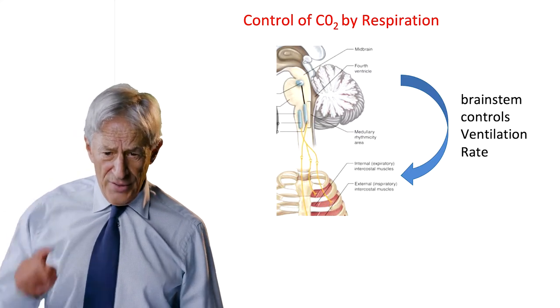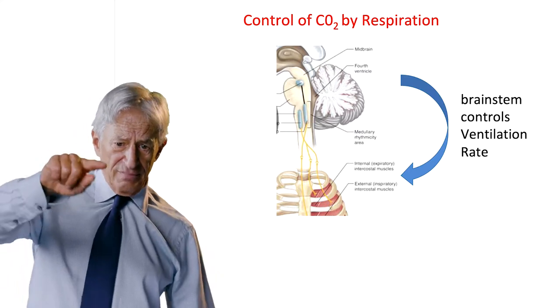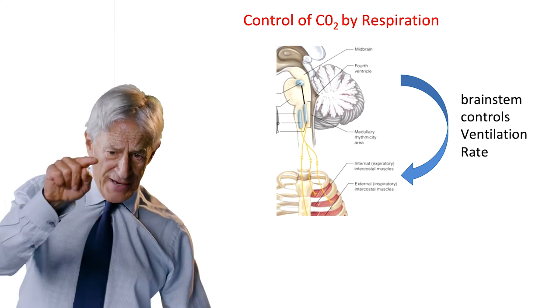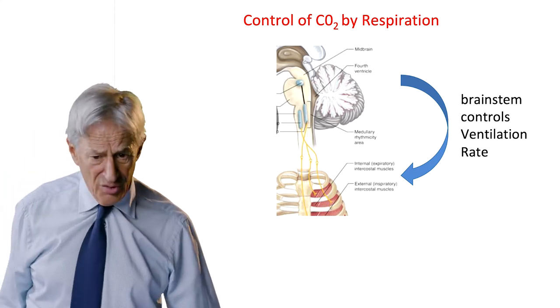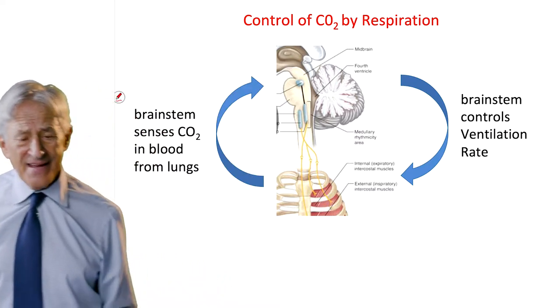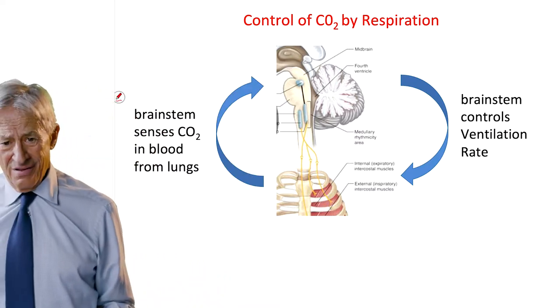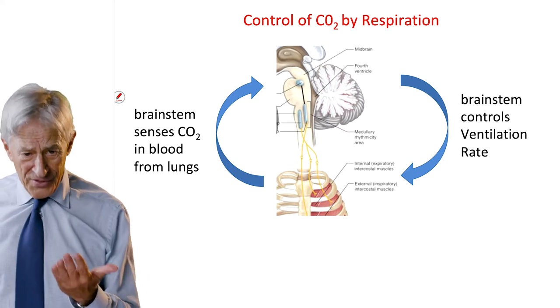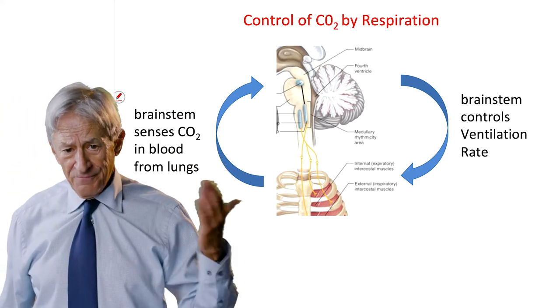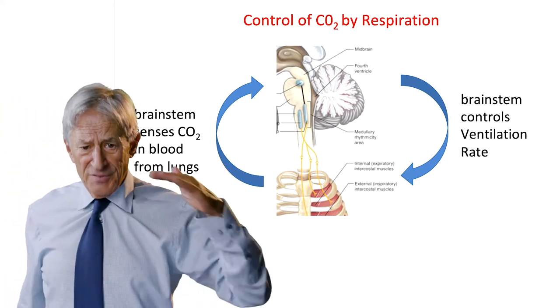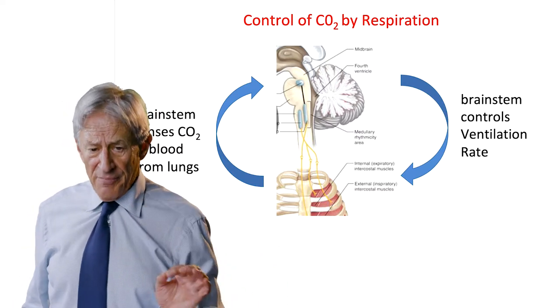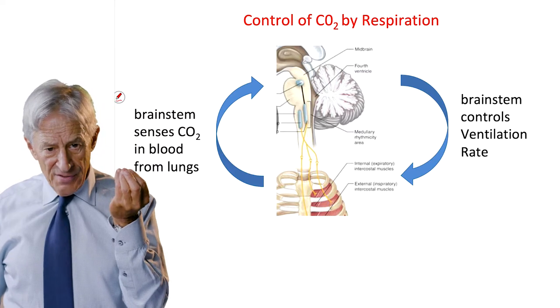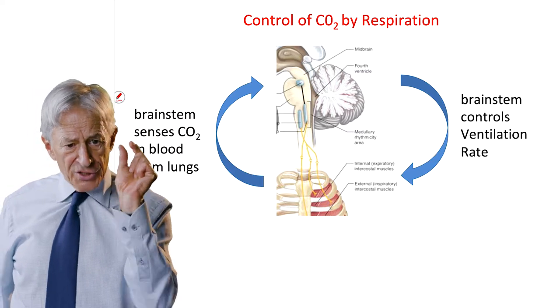Now in order to do that, in order for the brainstem to control the ventilation rate to regulate CO2, it also has to have the information to know what the CO2 level is. So there have to be, and there are, chemoreceptors in the brainstem that sense CO2 concentration.